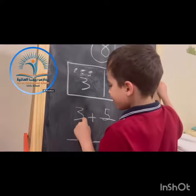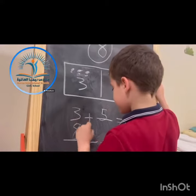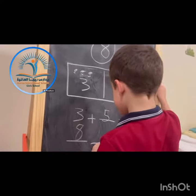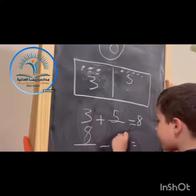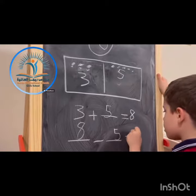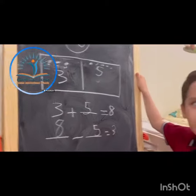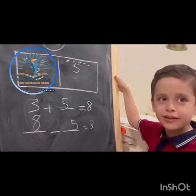So, 8 minus 5 equals 3. Bye, everyone. And we'll talk about it again.